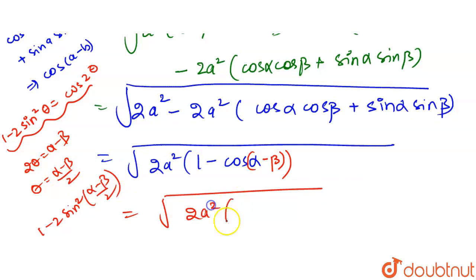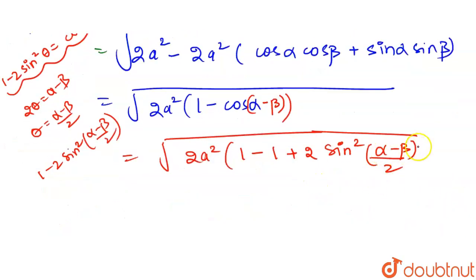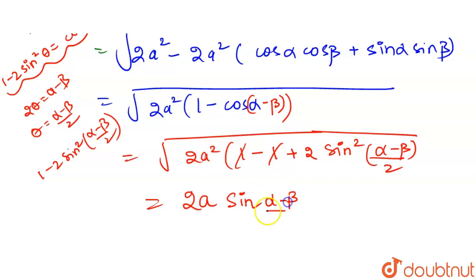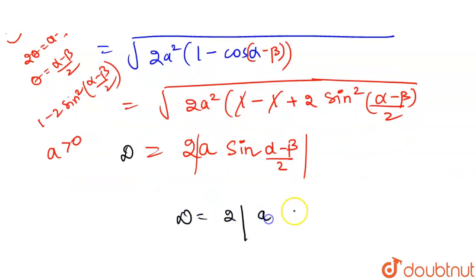Substituting, we get 2a²·[1 - (1 - 2·sin²((α - β)/2))]. The 1's cancel, leaving 2a²·2·sin²((α - β)/2). Taking the square root gives 2a·|sin((α - β)/2)|. Since a > 0, we use the modulus. So the final distance is 2a·|sin((α - β)/2)|.